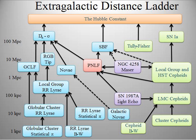Gravitational waves originating from the inspiral phase of compact binary systems, such as neutron stars or black holes, have the useful property that both the amplitude and shape of the emitted gravitational radiation depend strongly on the chirp mass of the system. By observing the waveform, the chirp mass can be computed. With the chirp mass and the measured amplitude, distance to the source can be determined.